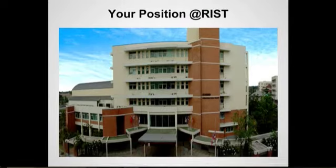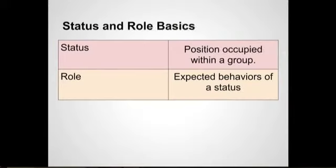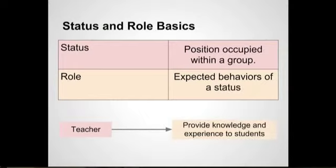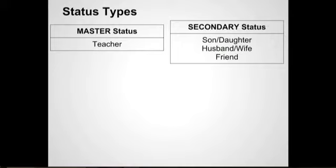How does this relate to your position at RIST? We are a social institution. Every one of us has a status or position we occupy within this group, and with this status we have roles — the expected behaviors. A teacher needs to fulfill role expectations such as providing knowledge and experience to students. That teacher's master status right now is teacher, but that teacher is also a husband, a daughter, a son, a wife, or a friend.